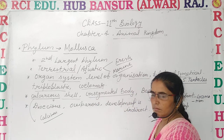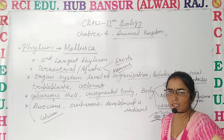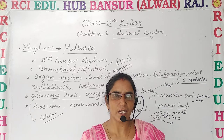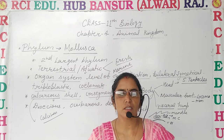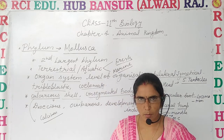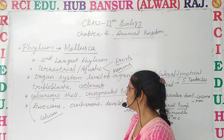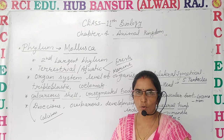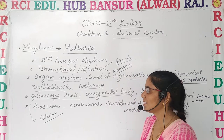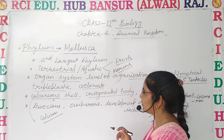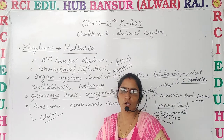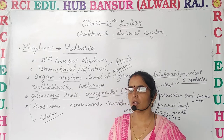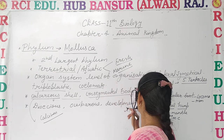Unsegmented body: we had seen that in Annelida the body has well-developed metameric segmentation — ring-like segmentation is present. But in Arthropoda, some segmentation is visible to some extent. However, if we talk about Mollusca, there is no segmentation over the body.